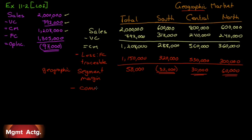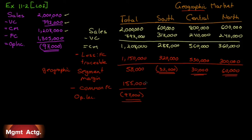We deduct common fixed costs, which we aren't directly given. But we know we must end with operating income of negative $97,000. So: $58,000 + $97,000 = $155,000 in common fixed costs. That checks out — $1,150,000 traceable + $155,000 common = $1,305,000 total fixed costs, which matches. Even if we eliminate the south, we only recover $32,000 — we'd still be losing $65,000. There's a bigger problem here.